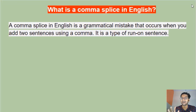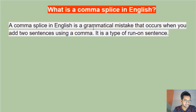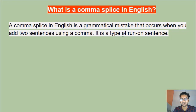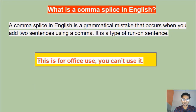So let's understand what is a comma splice in English. A comma splice is a grammatical mistake that occurs when you bring two independent clauses together using a comma. It's a type of run-on sentence — we'll talk about run-on sentences in a separate lesson. A comma splice is simply a situation where we bring together two sentences using a comma.